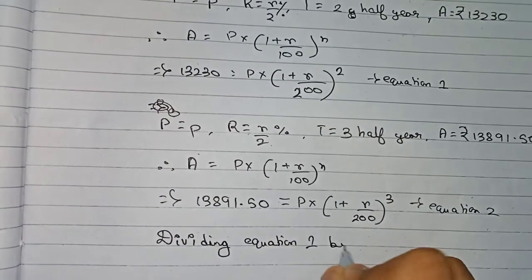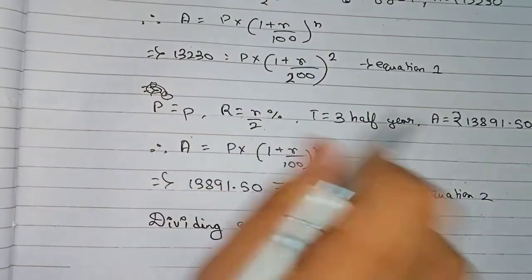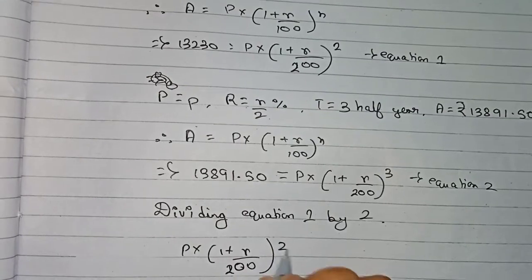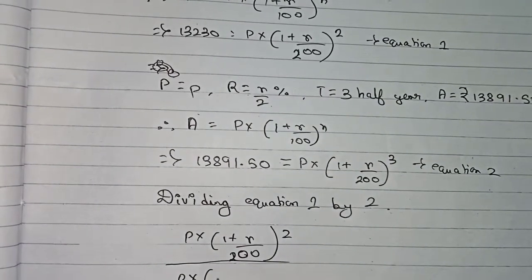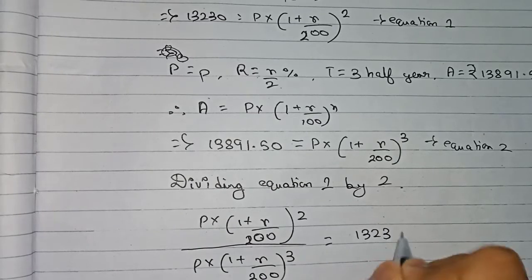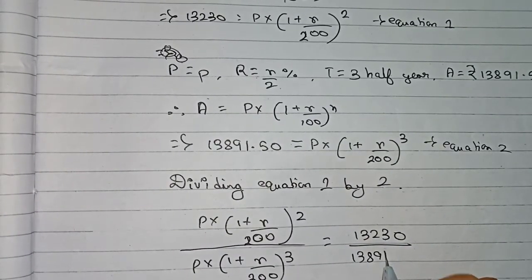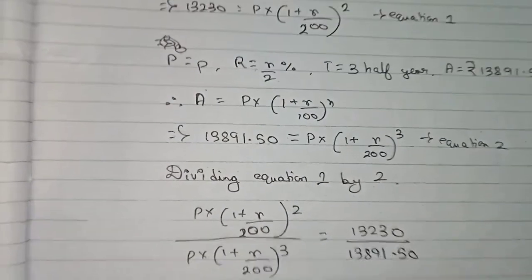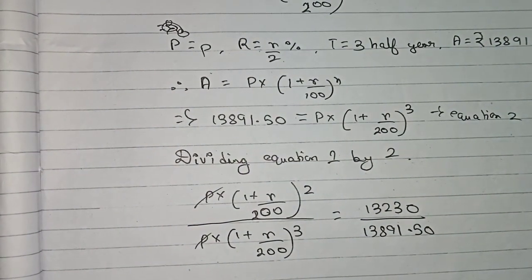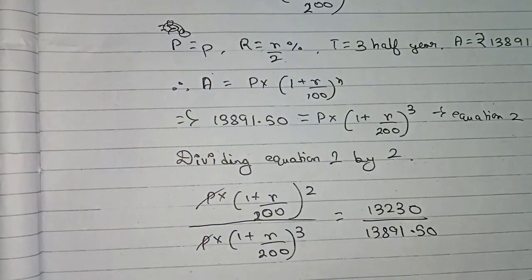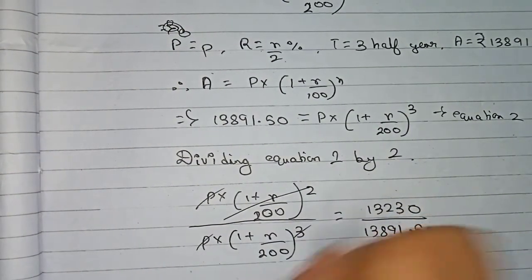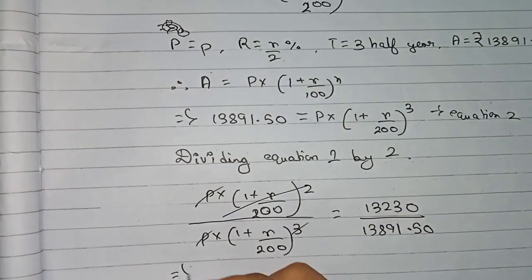Now we divide Equation 1 by Equation 2. The numerator is P into one plus r by 200 to the power 2, and the denominator is P into one plus r by 200 to the power 3. The amounts ratio is 13,230 divided by 13,891.50. The principal P cancels. Since the bases are equal, we subtract the powers: three minus two equals one, so one plus r by 200 to the power one remains.